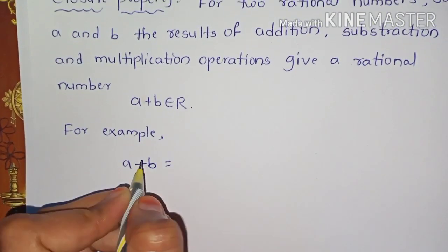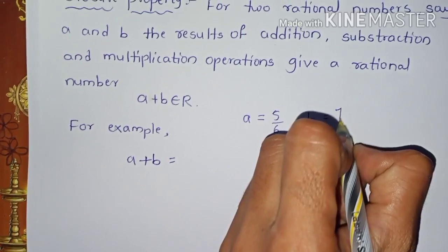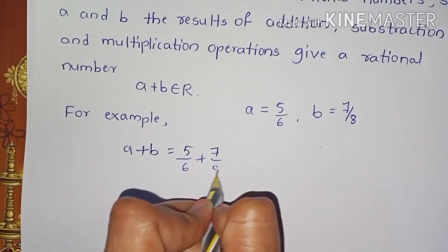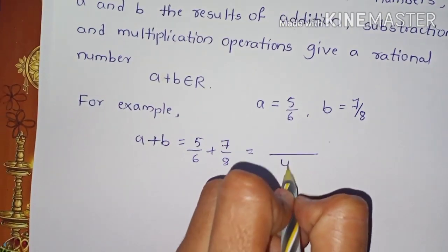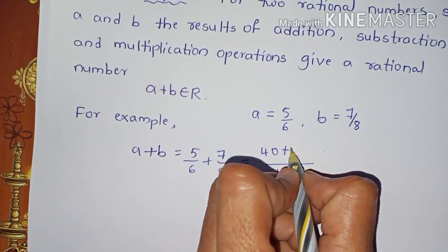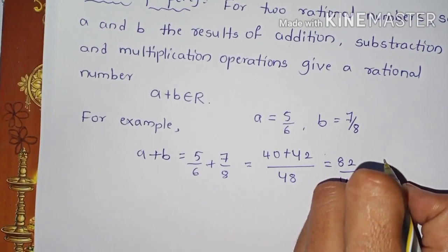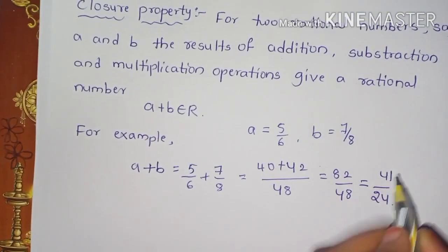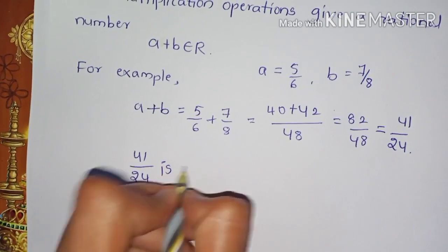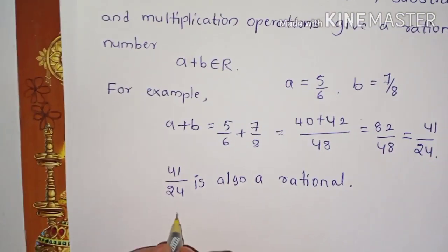For addition: A plus B. Taking A equals 5/6 and B equals 7/8, so A plus B equals 5/6 plus 7/8. The LCM of 6 and 8 is 48, giving us (8×5 + 6×7) / 48 = (40 + 42) / 48 = 82/48, which simplifies to 41/24. So 41/24 is also a rational number, satisfying closure property for addition.